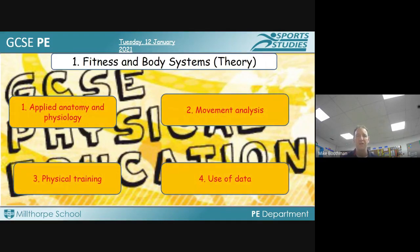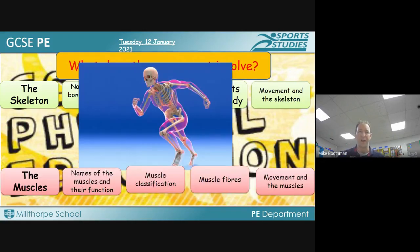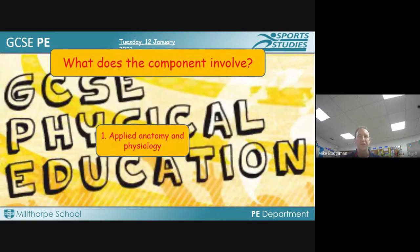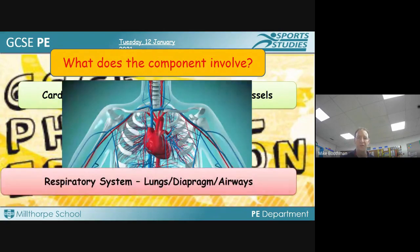Unit one is fitness and body systems — this is Paper 1 and there are four units of study: applied anatomy, movement analysis, physical training, and the use of data. Anatomy and physiology covers the body systems: the skeletal system, the muscles of the body, the cardiovascular system — heart, blood and blood vessels — and the respiratory system. All of these body systems impact our health and well-being and our ability to cope with the demands of our environment.